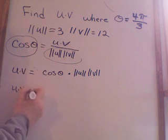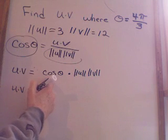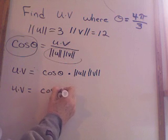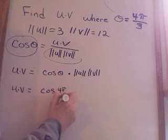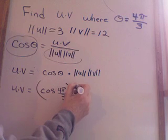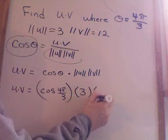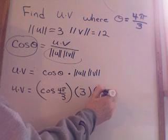Alright, u·v equals cosine of theta. So I need the cosine of 4π/3 times the magnitude of u, which is 3, and the magnitude of v, which is 12.